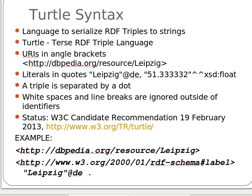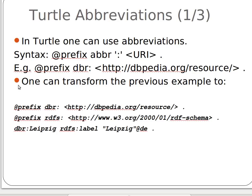Now we can actually have abbreviations in Turtle. I'm using Larissa Soldatova's slides here. In Turtle we can have abbreviations — for example, for a full URI we can define a prefix such as 'dbr' for DBpedia resources.